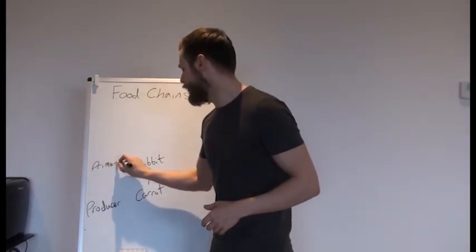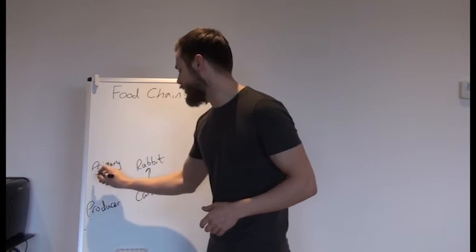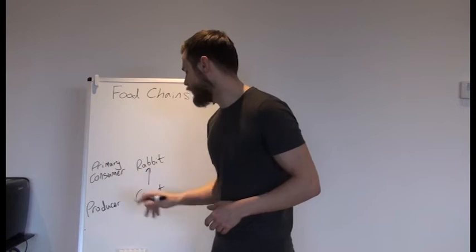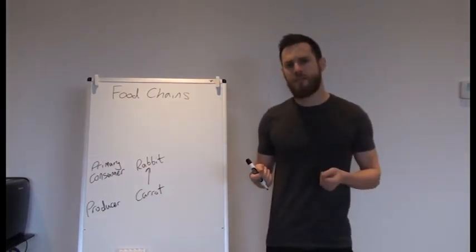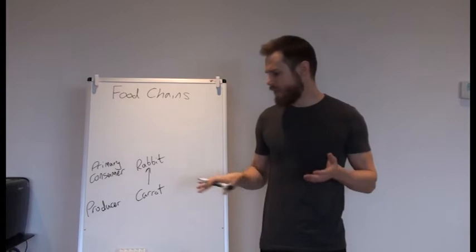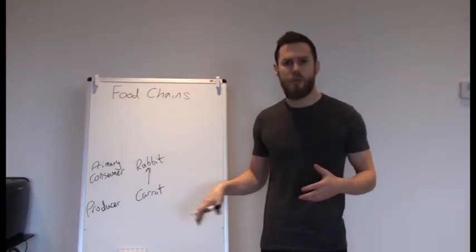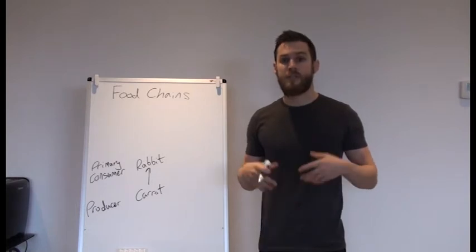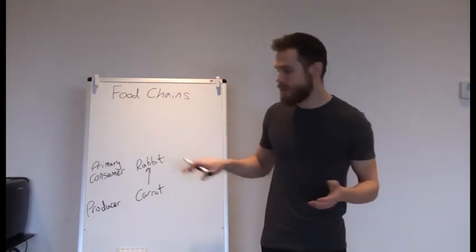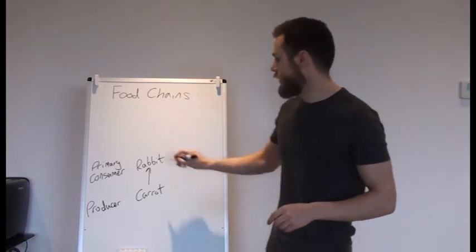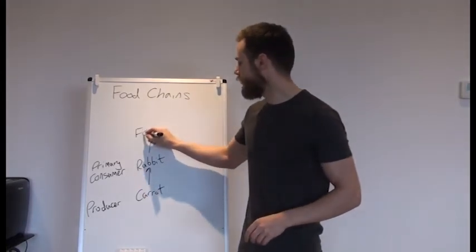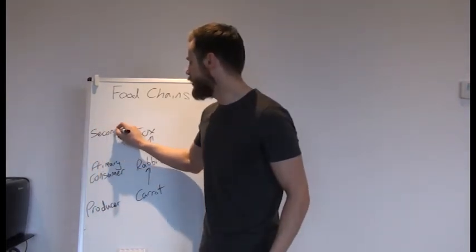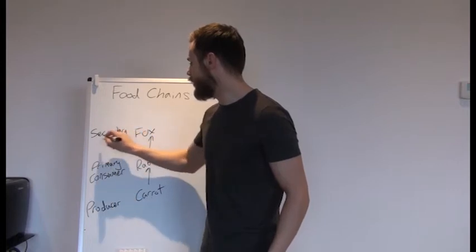A primary consumer is any organism which eats a producer. Next we have some organisms which cannot eat carrots and they also don't do photosynthesis. Now these we might call secondary consumers if they're able to eat the rabbit. In our example here we're going to have a fox. A fox is an example of a secondary consumer because it eats the primary consumer.